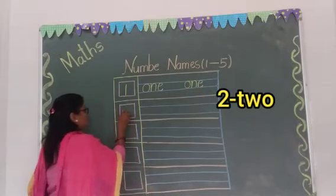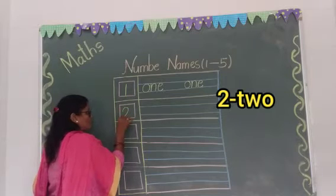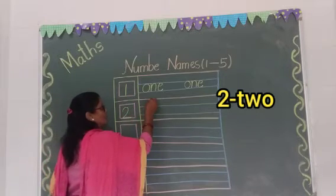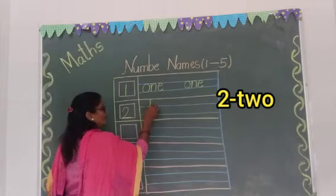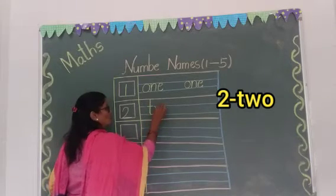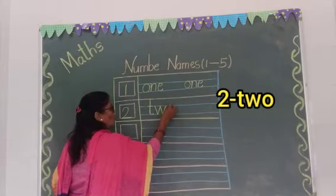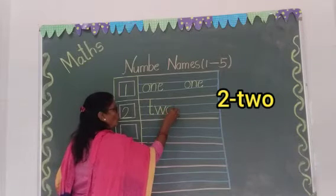Now second number, number 2. Write your number 2 in the box. T, W, O. Two.